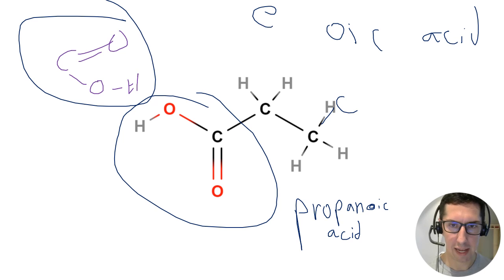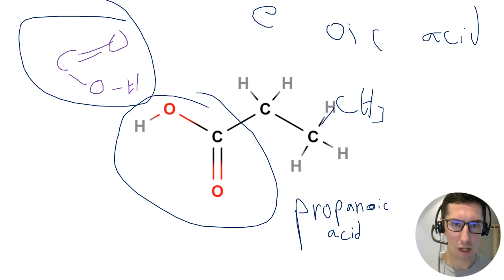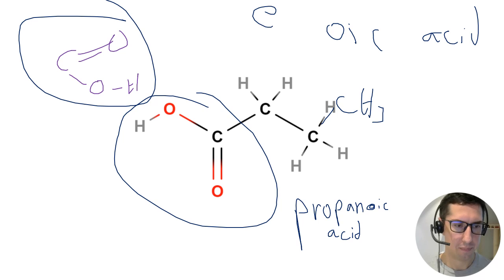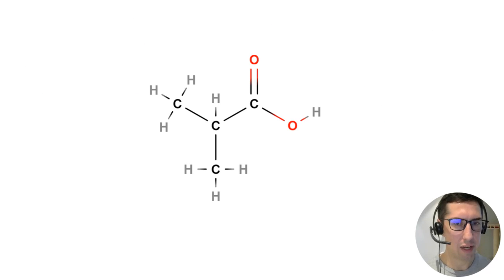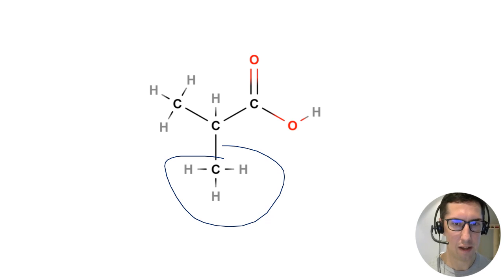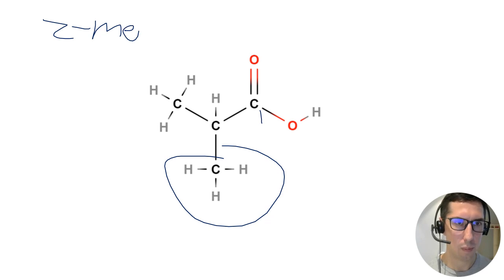Adding another carbon would give butanoic acid. For a more complex example with a side chain, the carboxylic acid carbon is carbon one, and there's a methyl group on carbon two. This would be called 2-methylpropanoic acid, though they would never give you something this difficult in the exam.